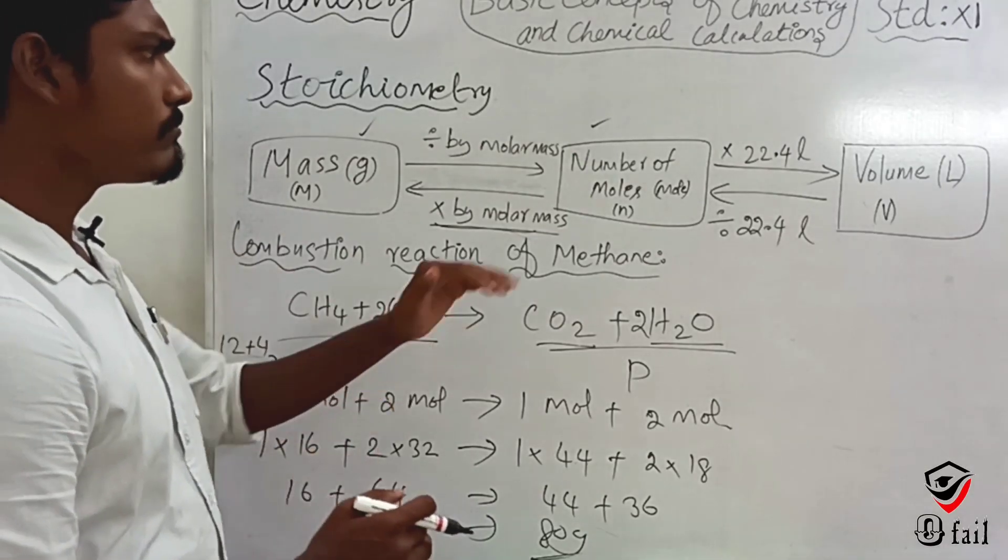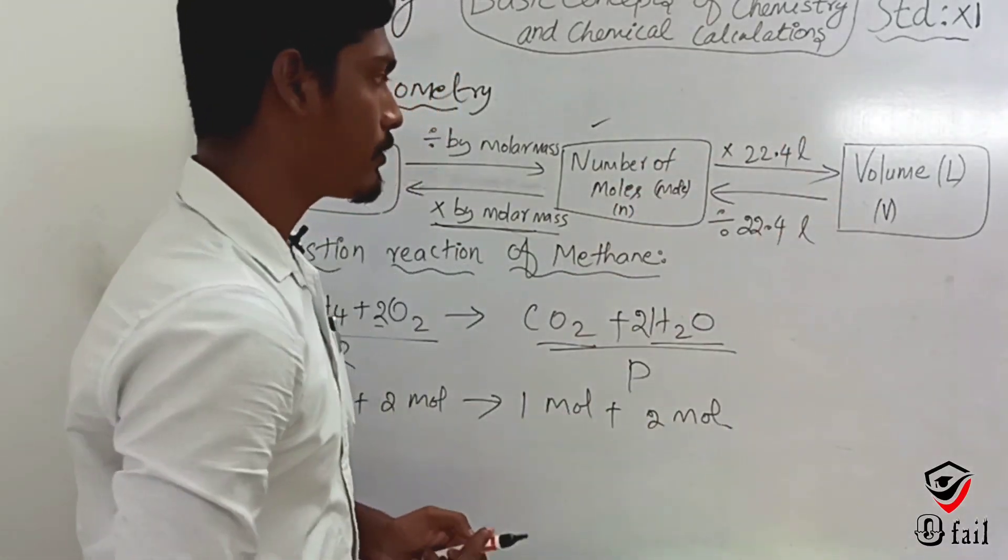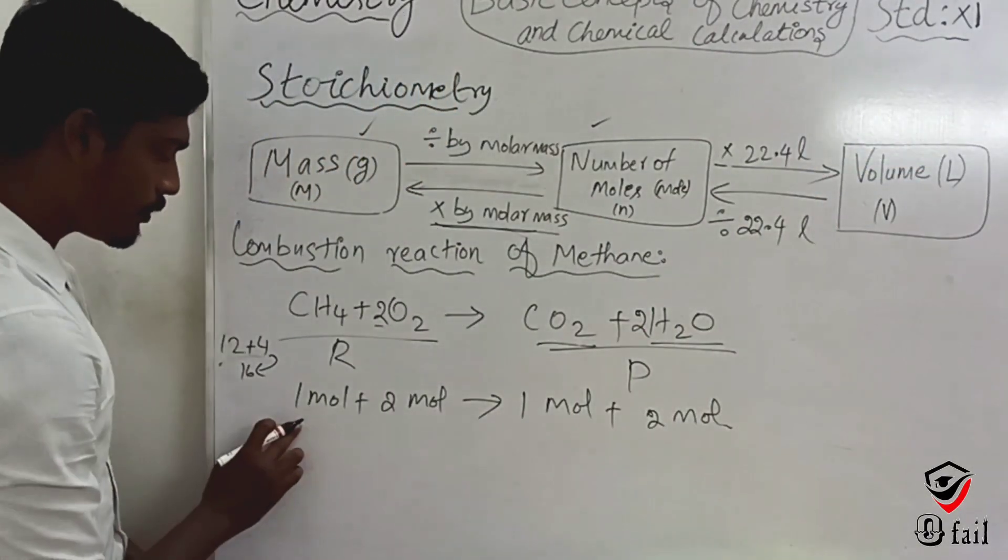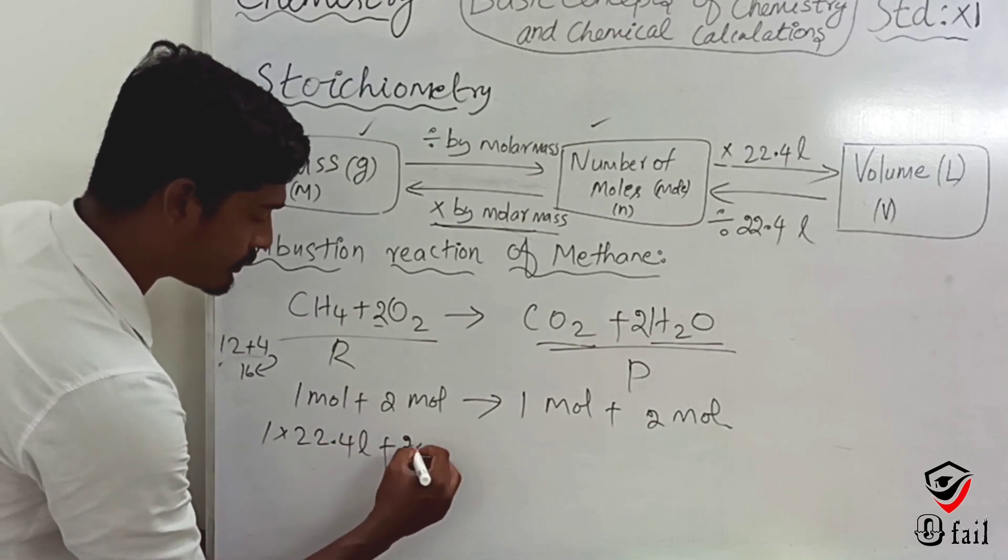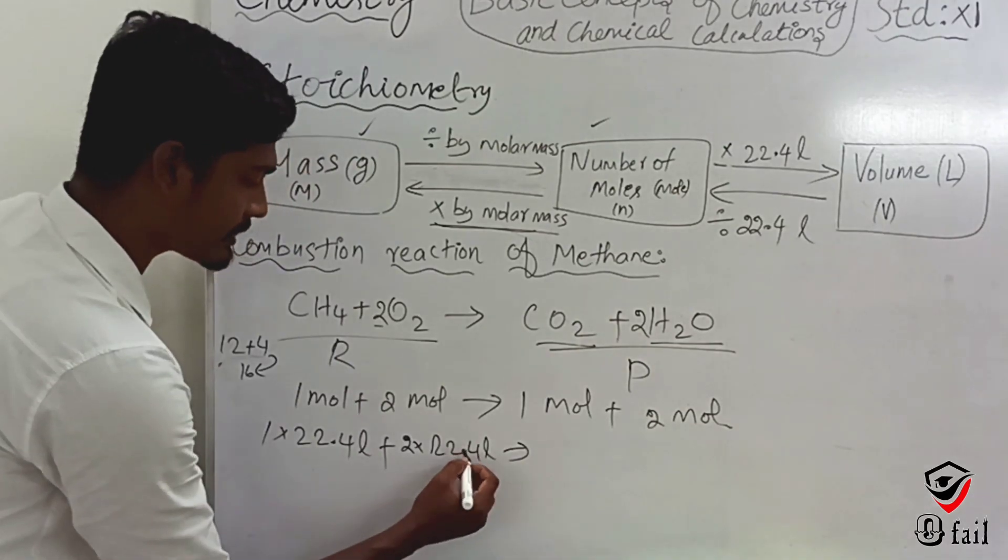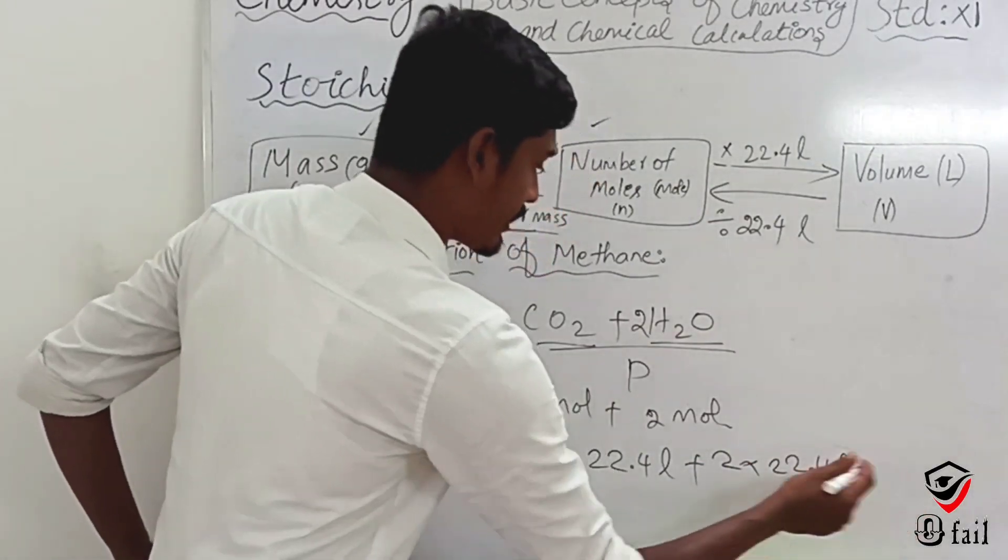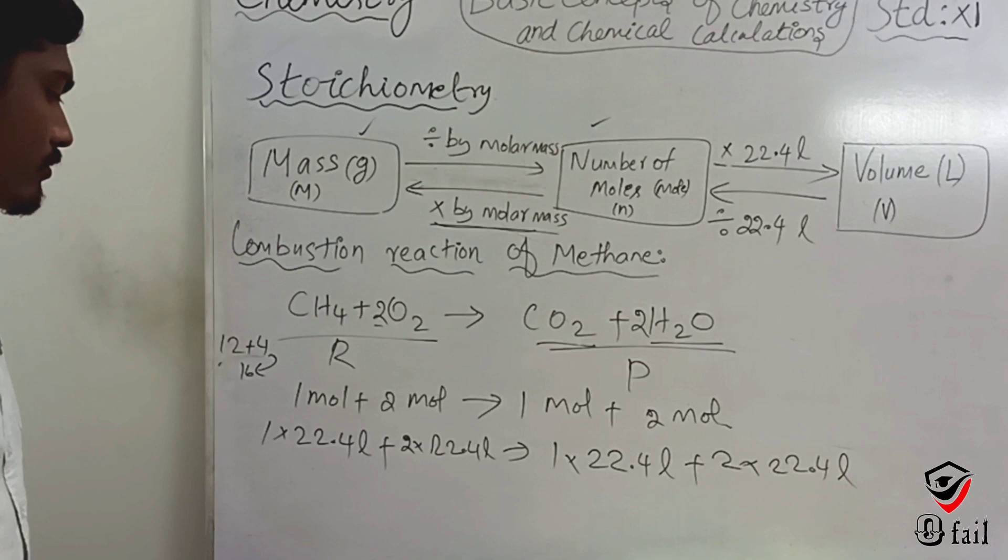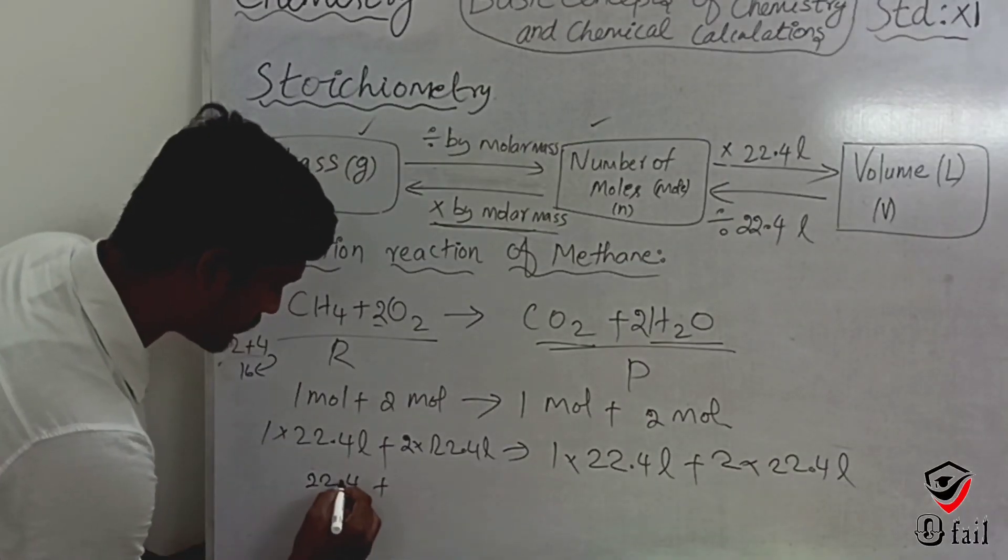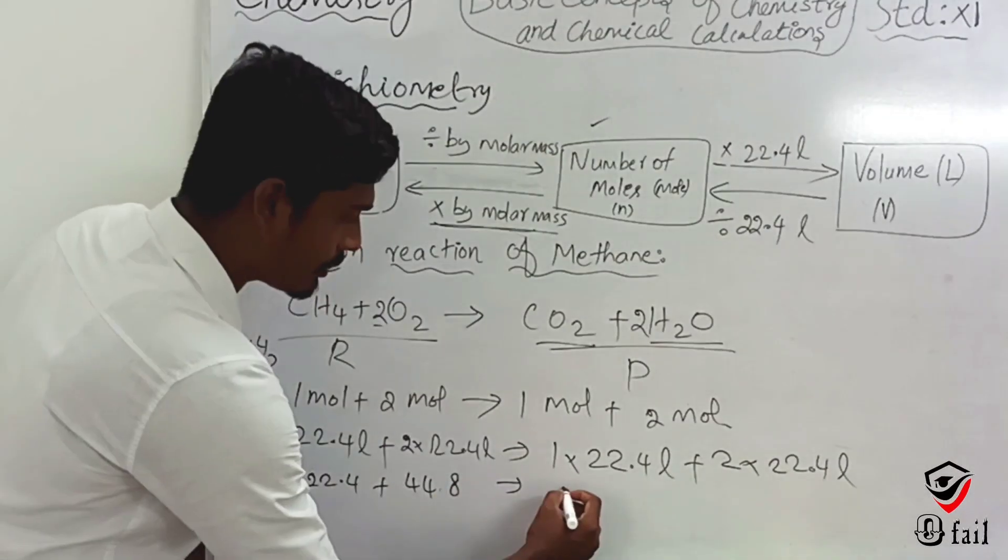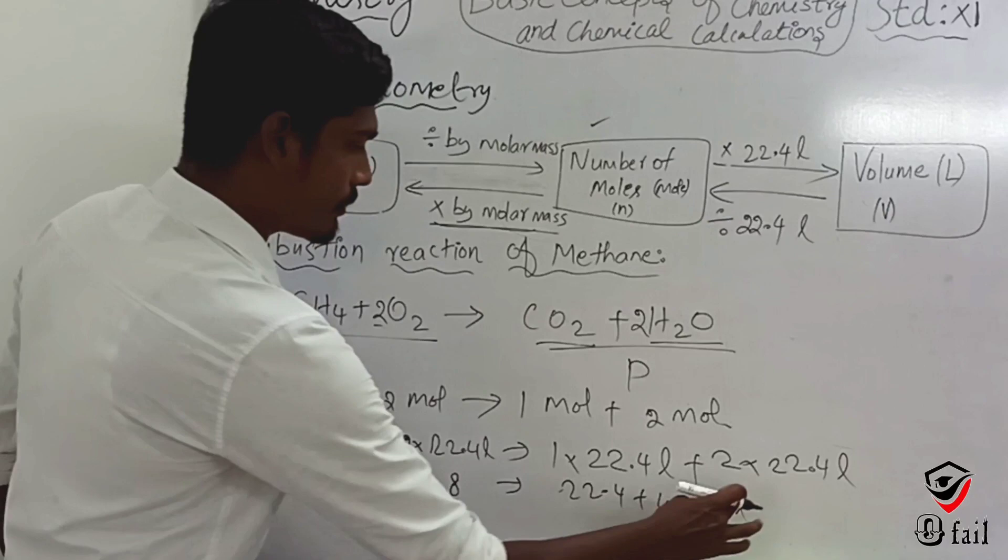Now let's see in terms of volume. 1 mole × 22.4 liters plus 2 moles × 22.4 liters equals 1 mole × 22.4 liters plus 2 moles × 22.4 liters. That's 22.4 + 44.8 = 67.2 liters on both sides. Everything is equal. So whether in moles, mass, or volume, we can solve stoichiometry problems.